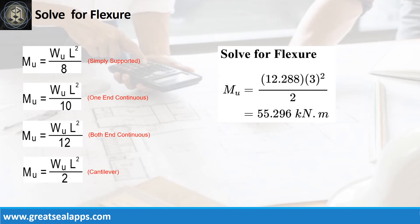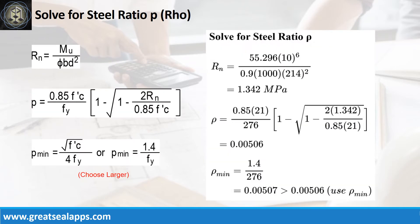Given factored load equals 12.288 kN per meter and L equals 3 meters, the maximum moment is 55.296 kN meter. Given maximum moment equals 55.296 kN meter,